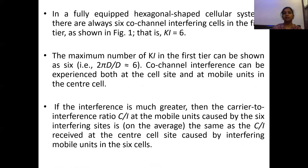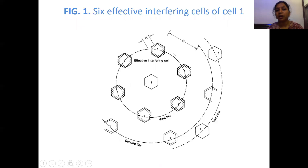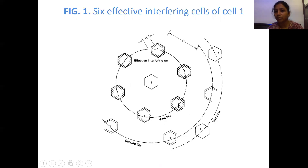In a fully equipped hexagonal shaped cellular system, there are always six co-channel interference cells in the first tier. You can see here — this is cell one. For cell one, this is what we call the first tier, this is the second tier, and this is the third tier. Each surrounding ring of cells at a distance D covers the center cell, and each cell has radius R. An additional distance is maintained at the second tier.